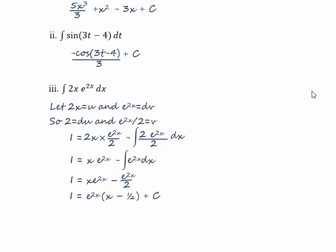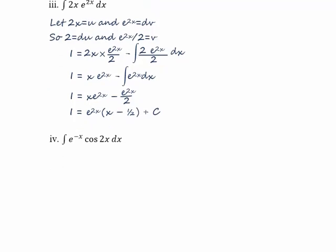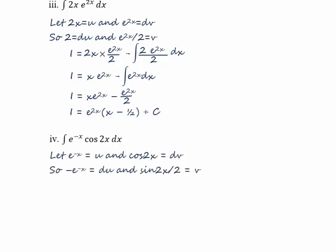That's the end of Part 3. Part 4: again we've got two factors of x, e to the minus x and cos(2x), so we're going to use integration by parts. We'll let e to the minus x equal u and cos(2x) equal dv. We'll differentiate e to the minus x to get minus e to the minus x, and we'll integrate cos(2x) to get sine(2x) over 2.